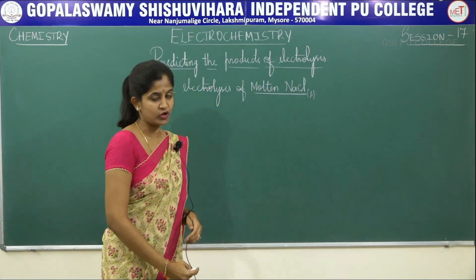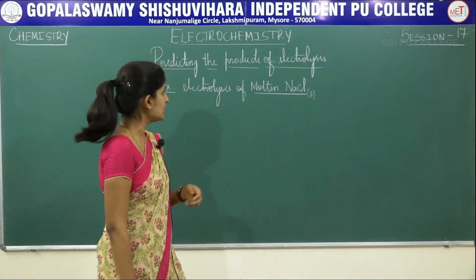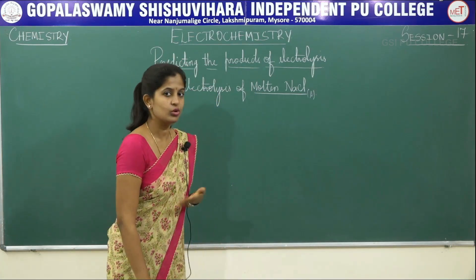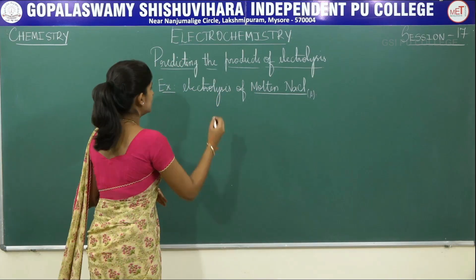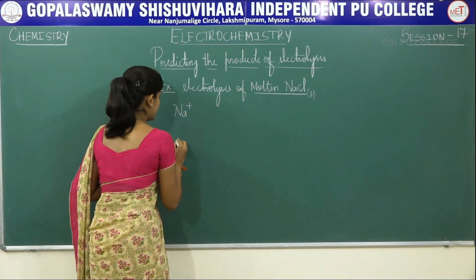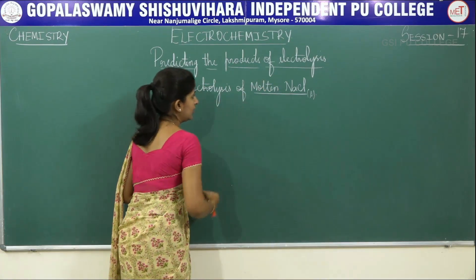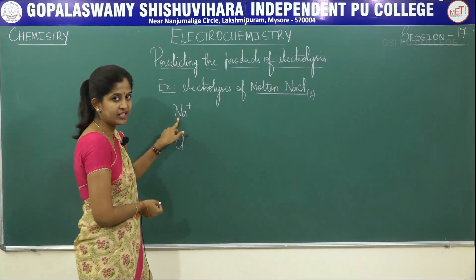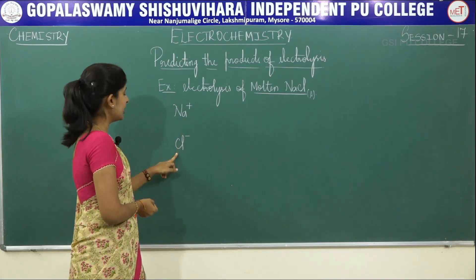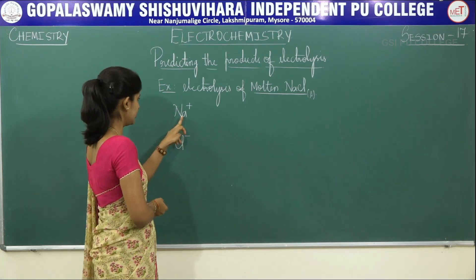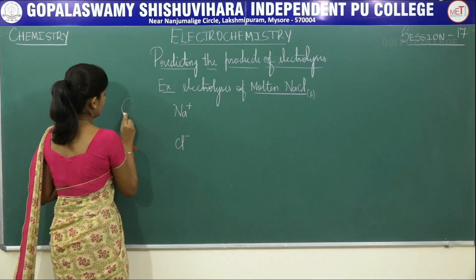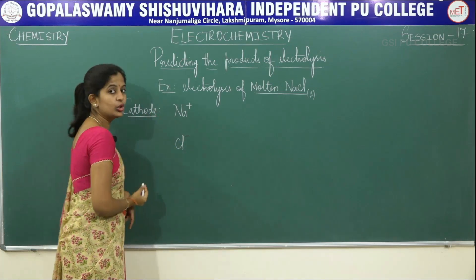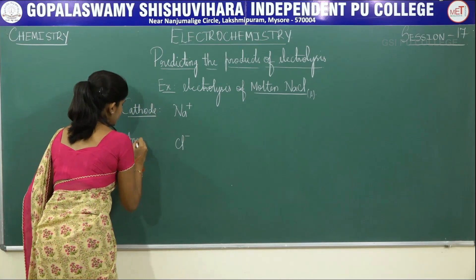Molten NaCl, which we have already studied in session number 2, is your liquid NaCl. The products you already know: NaCl dissociates into sodium ions and chloride ions. Sodium ions are positively charged — that is your cations. Chloride ions are negatively charged — that is your anions. Cations move towards cathode and anions move towards anode.